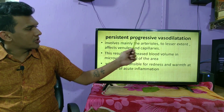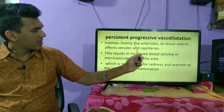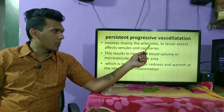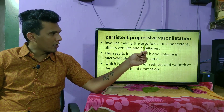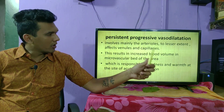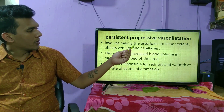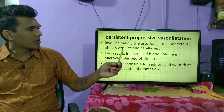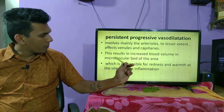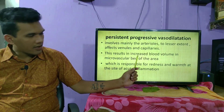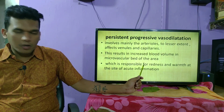Persistent progressive vasodilatation mainly involves the arterioles and to a lesser extent affects the venules and capillaries. Since arterioles supply blood to that particular area, their dilation results in increased blood volume in the microvascular bed of that area.